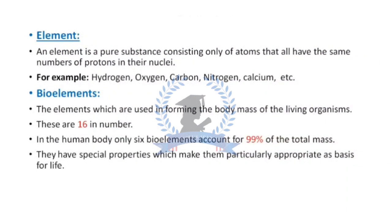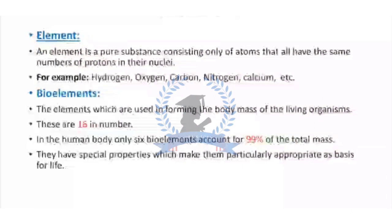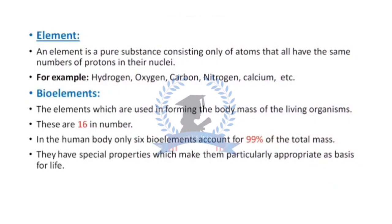Among these elements, there are approximately 95 elements. Among these elements, 16 are called bioelements. Here the word bio means living or life. These are the elements which are used in forming the body mass of living organisms. In nature there are 95 elements, but there are just 16 which form the body of living organisms. In human body, only 6 bioelements account for 99% of the total mass.